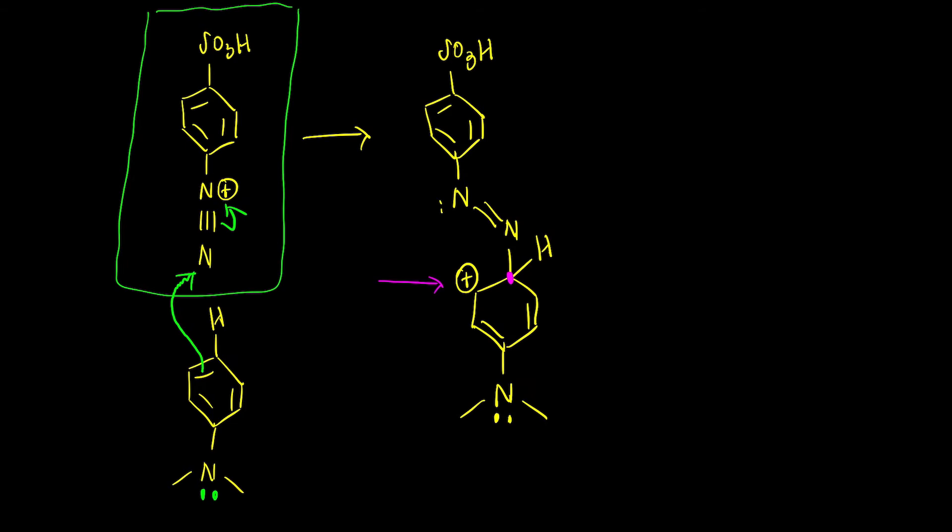This is a resonance stabilized intermediate. You could draw three other resonance structures - not including resonance of the other pi bonds in the molecule, but you could draw a lot of resonance structures. We don't care about that really. What we want to do is deprotonate this hydrogen right here.